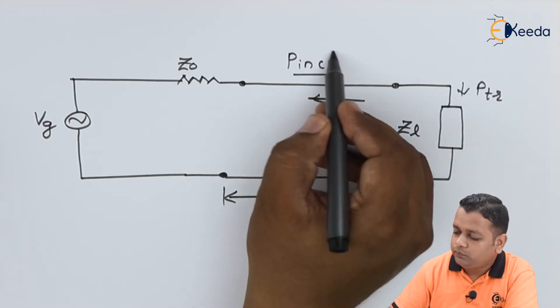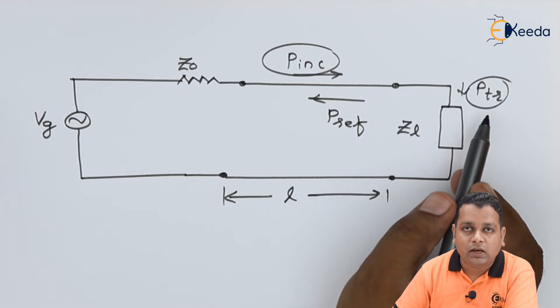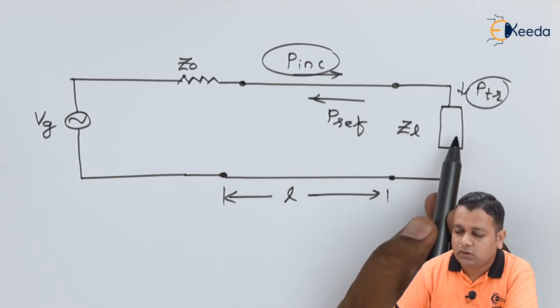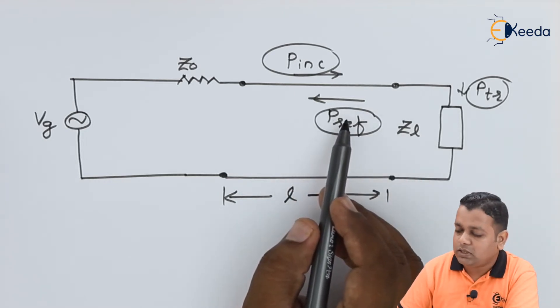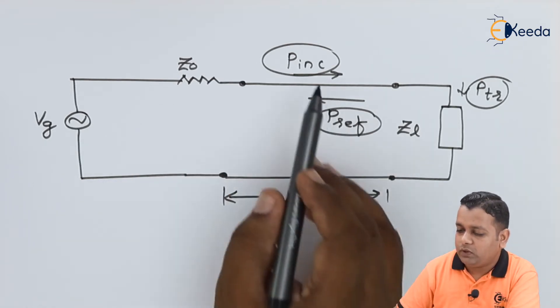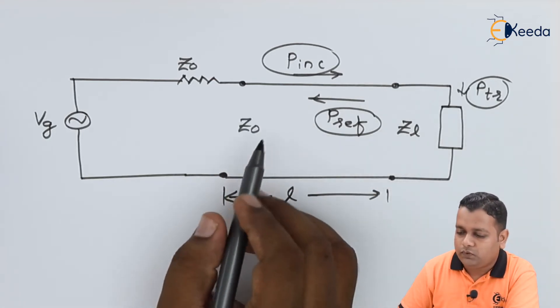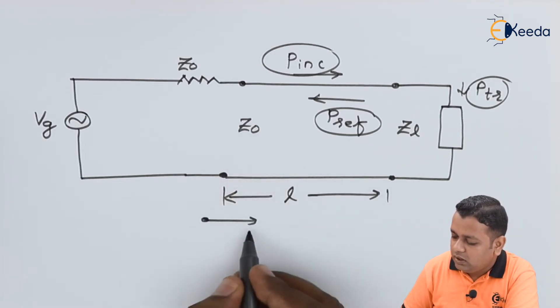So the total incident power P_INC has one component P_TR actually delivered to the load, and another component P_REF reflected back due to the mismatch of characteristic impedance Z₀ with the load impedance Z_L. These are the three components of power. At the receiving end — at the position of the load impedance — we can express two equations corresponding to the traveling waves.